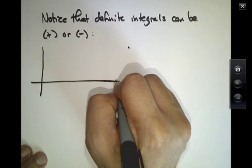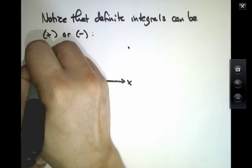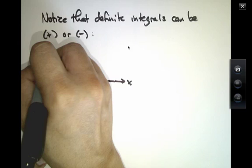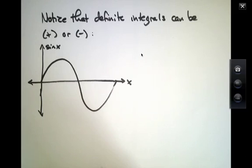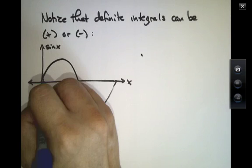So let me just point out why it can be positive or negative. Let's take a simple example. Let's take the sine function. The sine looks something like that.